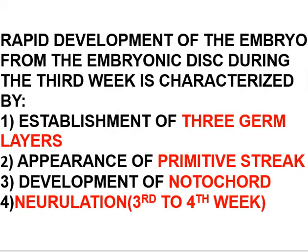The main events which occur during the development of the third week are: establishment of three germ layers, number two is the appearance of primitive streak which we already have studied, number three is the development of notochord, and number four is the neurulation, which starts in the middle of the third week and ends in the early part of the fourth week.